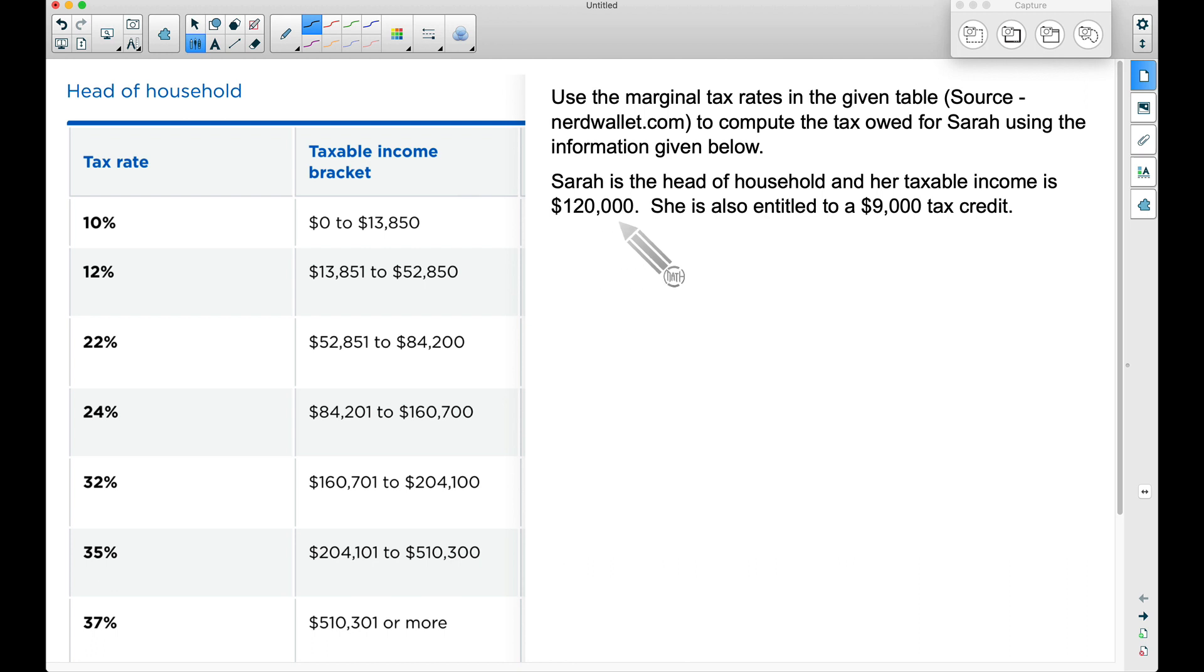She's going to pay taxes on this amount, though her gross income I'm sure was higher than this. Now the tax credit, that's a completely different topic. We'll worry about this $9,000 tax credit at the end of the problem.